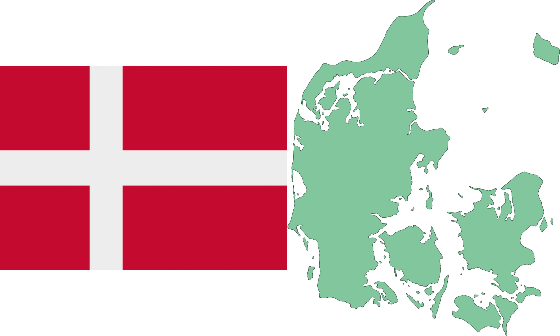Spanning a total area of 42,943 square kilometers (16,580 square miles), metropolitan Denmark consists of the northern part of the Jutland Peninsula and an archipelago of 406 islands.